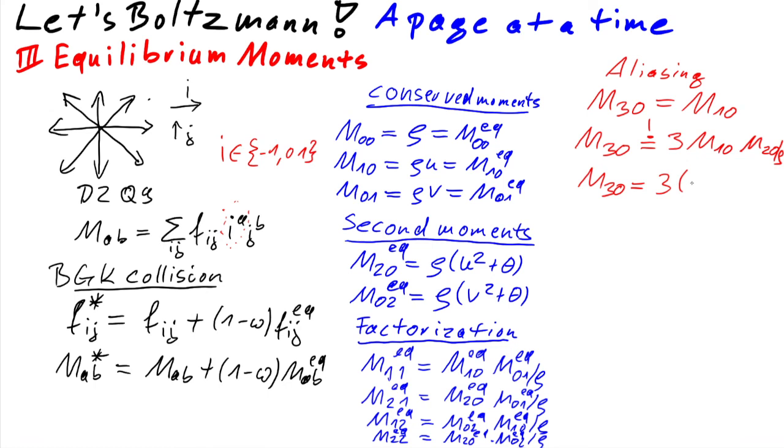three times divided by rho of course normalization. So this evaluates to three times u times u squared plus theta. And this of course can be written as three rho u theta, and what it is, it is rho u.